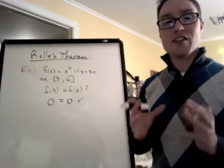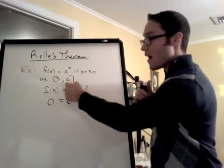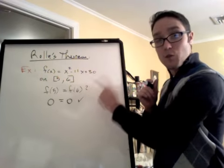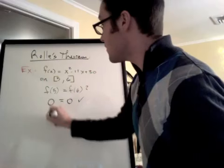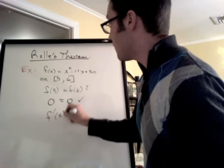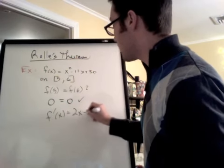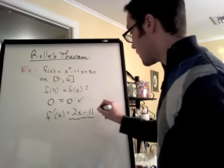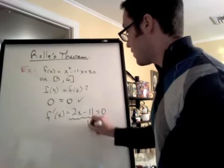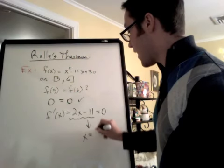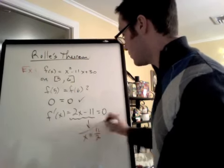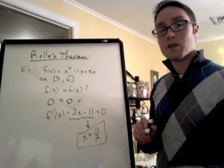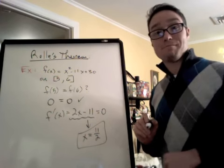So the question is, find the c. Find the value between 5 and 6 where this polynomial is flat, where the derivative equals 0. So I'm going to take the derivative, f'(x) = 2x - 11. I want to find out where is that equal to 0. So I set it equal to 0, solve it, and I get 11/2. And that's my answer. So that's the c value guaranteed by Rolle's theorem for the function to be flat. Easy.